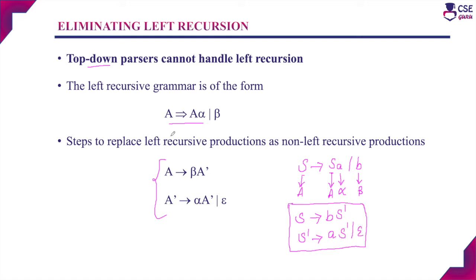Whenever the left recursive grammar is of the form A derives A-alpha or beta, we write it in two steps to eliminate the left recursion: the first step is A derives beta A-dash, and the second step is A-dash derives alpha A-dash or epsilon. This is the general form when there is only one alpha production and only one beta production.